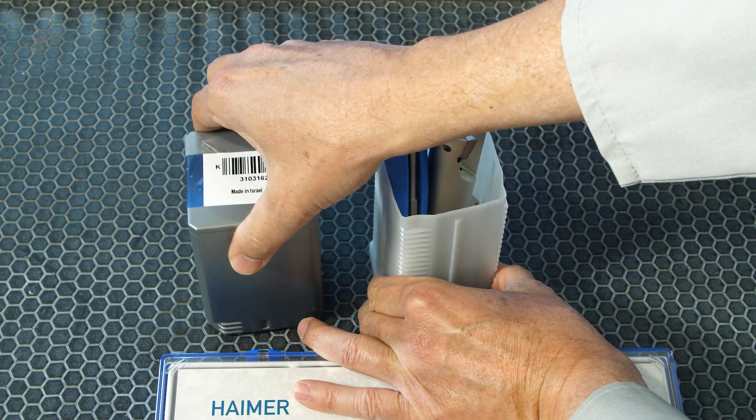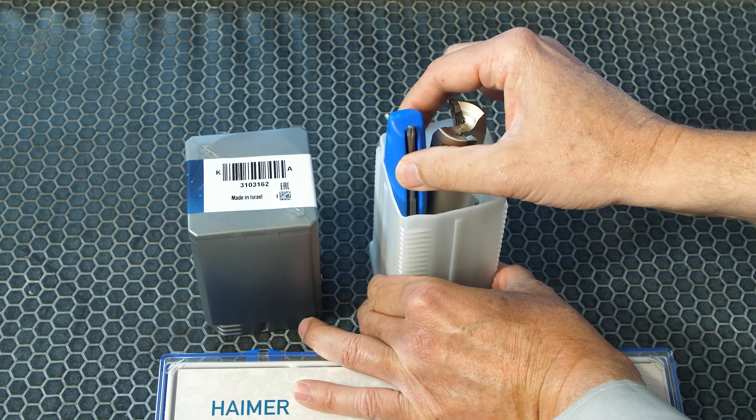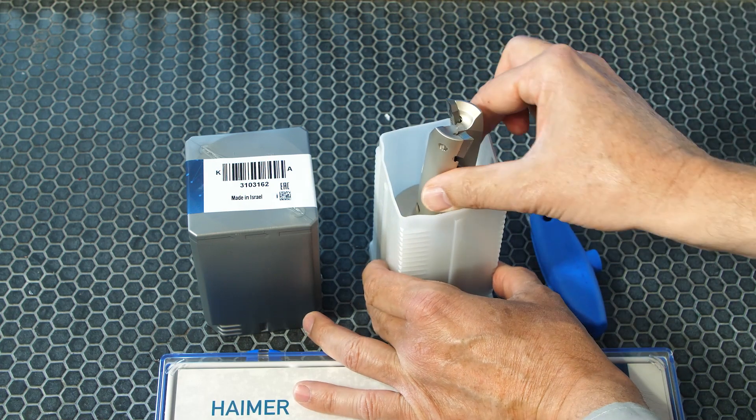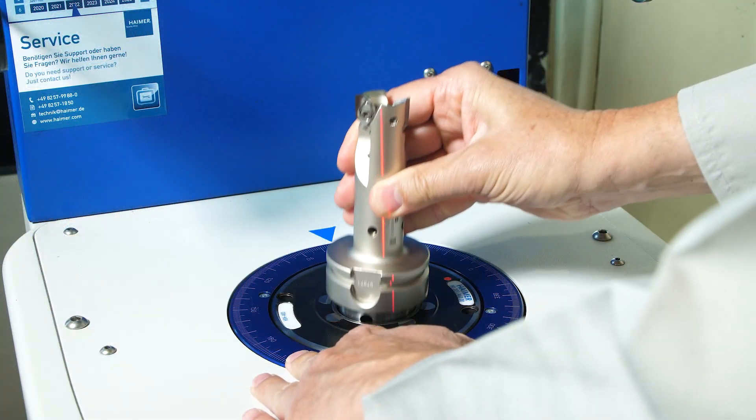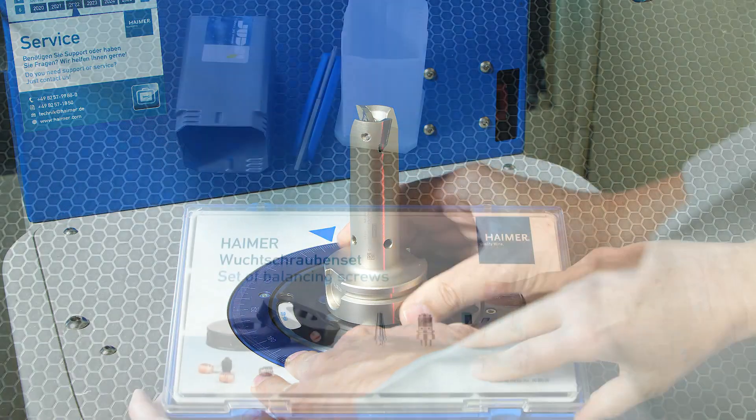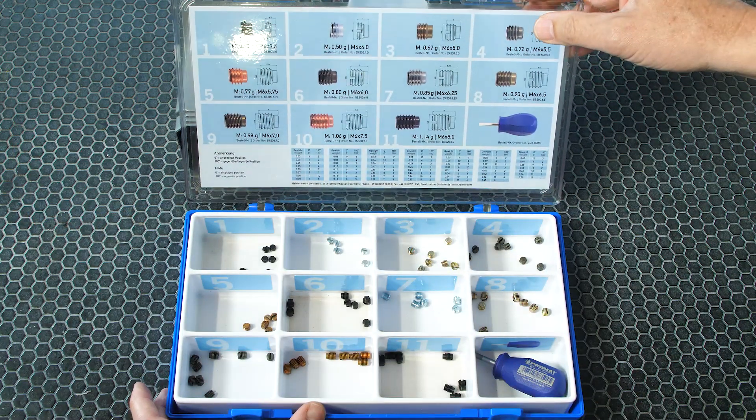Iskar has expanded its family of popular 90-degree indexable milling cutters with HSK adapters by adding M6 fine balancing threads and a corresponding kit containing 11 screws.